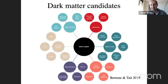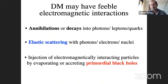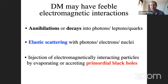The million-dollar question is what dark matter is made of. We've heard talks about primordial black holes and particle dark matter. I'm going to talk about both. The common thread will be the possible electromagnetic — or rather feeble electromagnetic — interactions that dark matter candidates may have.